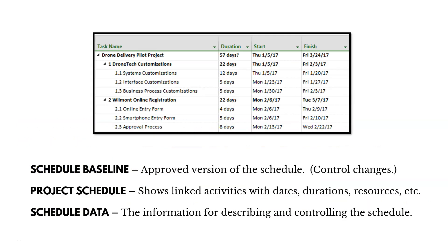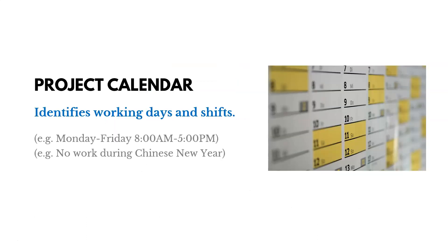The outputs of Develop Schedule include: a schedule baseline — the approved version of the schedule, our authorized plan against which we control changes and compare actuals; the project schedule — showing linked activities with dates, durations, milestones, and resources (which we'll build in Microsoft Project); schedule data — information describing and controlling the schedule, similar to what a WBS dictionary is to a WBS; and project calendars — identifying working days and shifts, telling us when our team will be working.